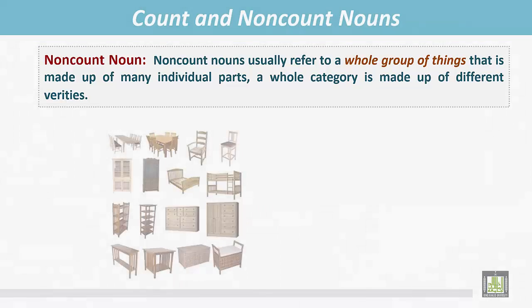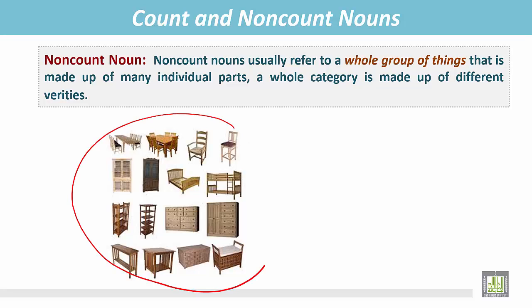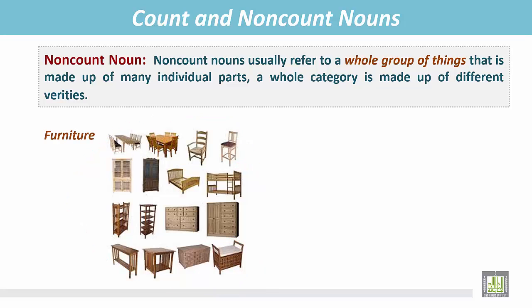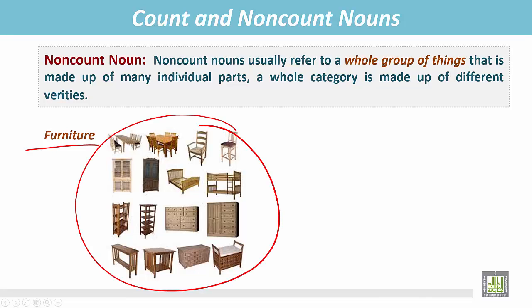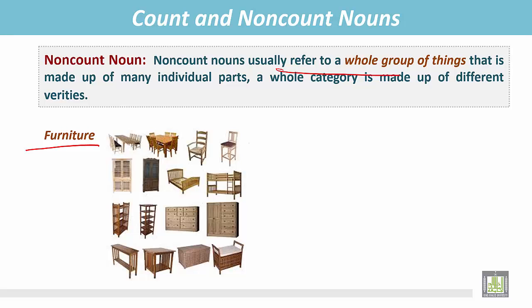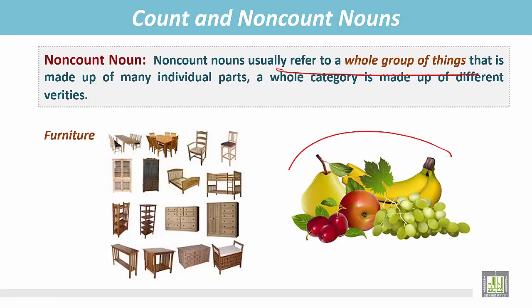In this picture we see different items we use at home: chairs, bed, table, almira — different individual parts making a whole group. The whole group refers to the word 'furniture.' All these individual parts or items refer to a whole group of things, and that is furniture.